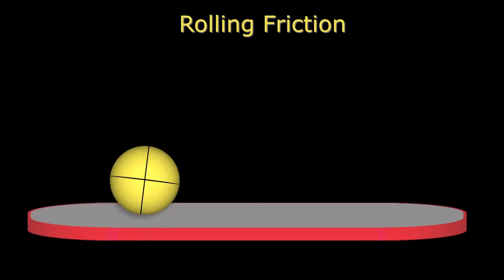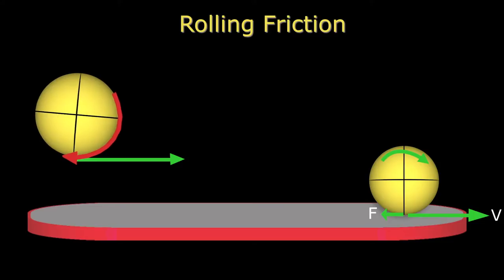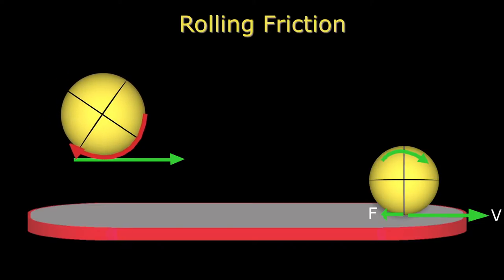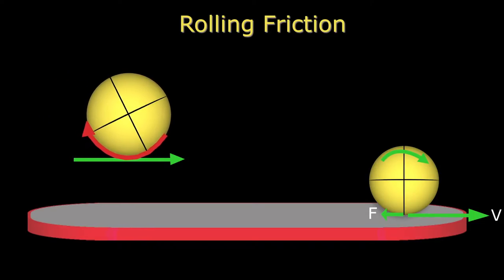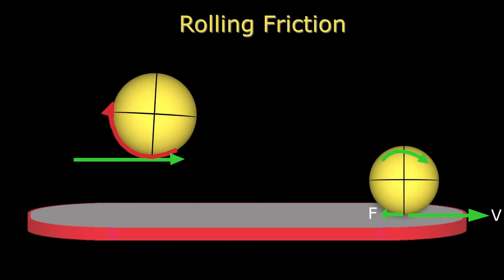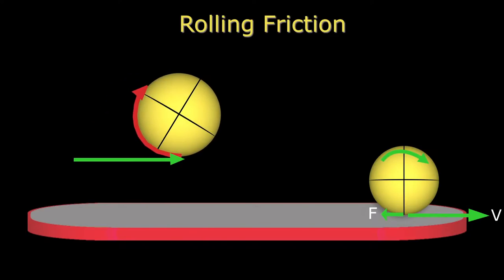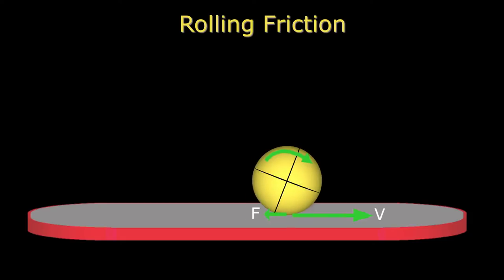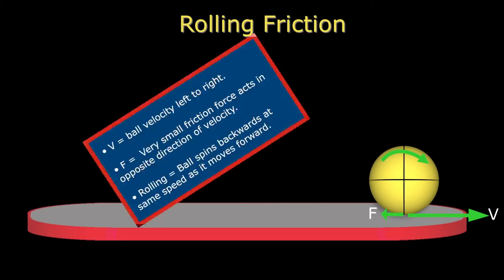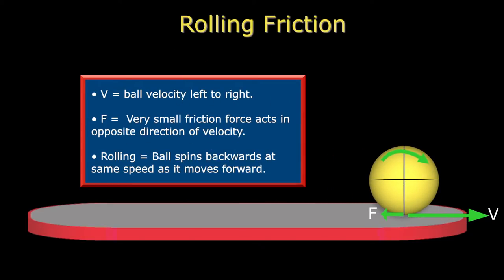When a ball rolls, there is very little friction because the speed of the spinning ball at the contact point is equal to, but in the opposite direction of, the ball's forward linear motion. The speeds cancel so that there is no relative motion between the surfaces, and thus almost no friction. The ball will roll a relatively long way before it stops.